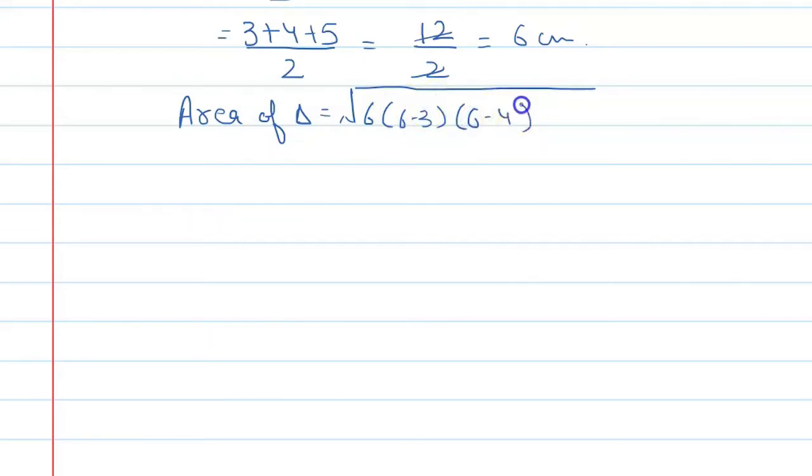Area of triangle again: 6 minus 3, 6 minus 4 and 6 minus 5. Alright.